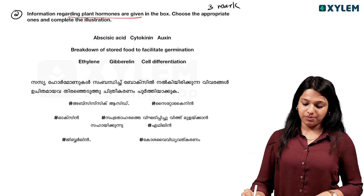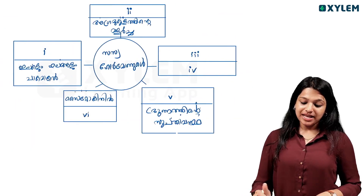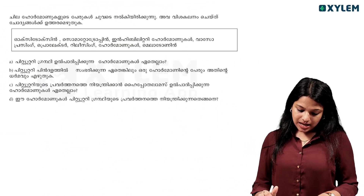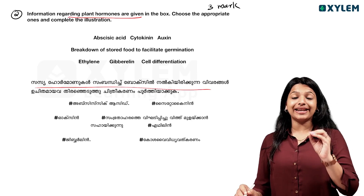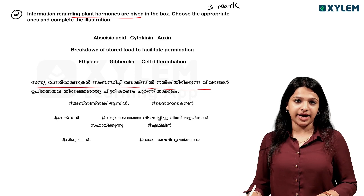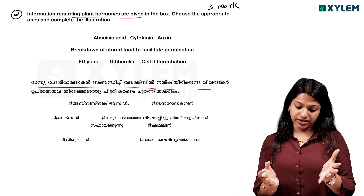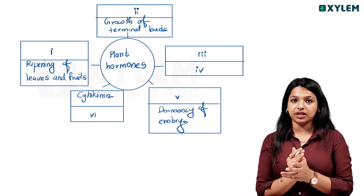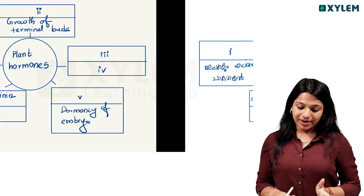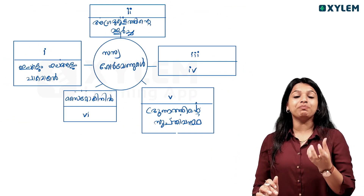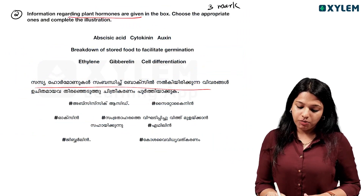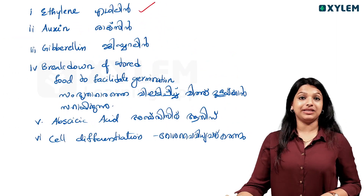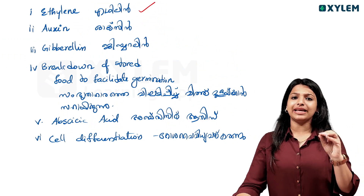Next question: information regarding plant hormones is given in the box. Choose the appropriate ones and complete the illustration. It is about plant hormones. We use cytokinin, auxin, and fill in the boxes properly. One function listed is ripening of leaves and fruits. We look at which hormones match. Then we look at the box — it has four answers: one, two, three, four.